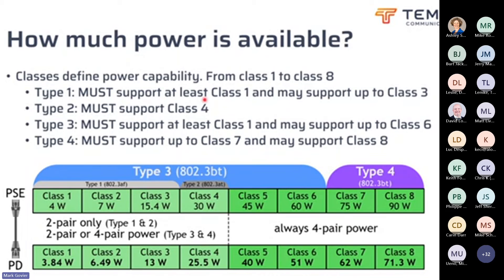Type three and type four, by utilizing all four pairs, can expand on that. Type three allows up to 51 watts at the powered device, and type four allows up to over 71 watts — enough for a small display screen, a small server, or even a laptop. Classes five through eight are covered by these higher types. Each type must support all the classes within it. Type two must support class four and also implies classes three down to one. Type three must support at least class one and may support up to class six, so check the spec carefully. The same applies to type four, which may support class eight. You might have a type four device that works at 62 watts — don't connect a 71 watt device to it because it'll possibly fail. Always check the specs on devices when installing them.